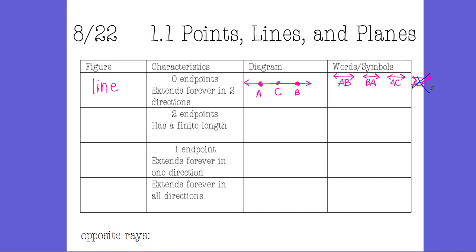Sometimes we give lines a label, usually a cursive letter. For example, this is L. Notice L is not a point — it's a label floating in space, not attached to a specific point. If a label is given, I can call that line L. I don't want to say 'line AB' in words — I want to write it symbolically with the line symbol on top when using points.